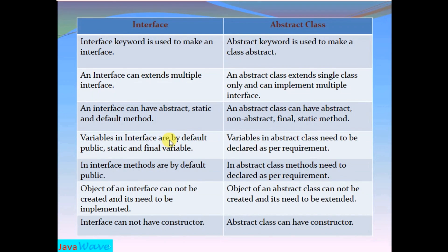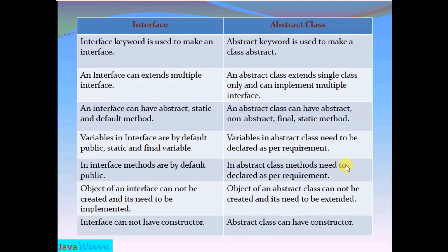Variables in an interface are by default public, static, and final — whether we declare them as public, static, final or not. Whereas variables in an abstract class need to be declared as per their requirement. In an interface, all the methods are by default public, whereas in an abstract class, methods need to be declared as per their requirement.